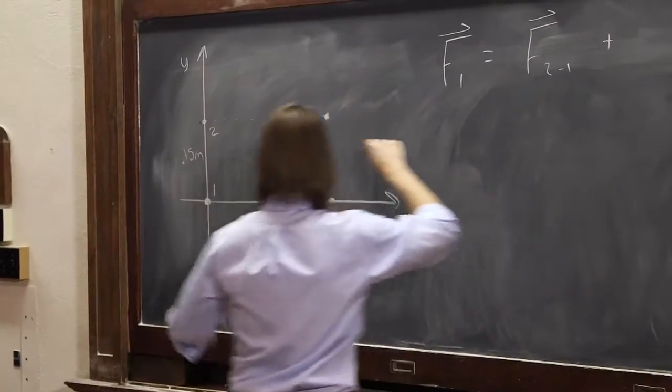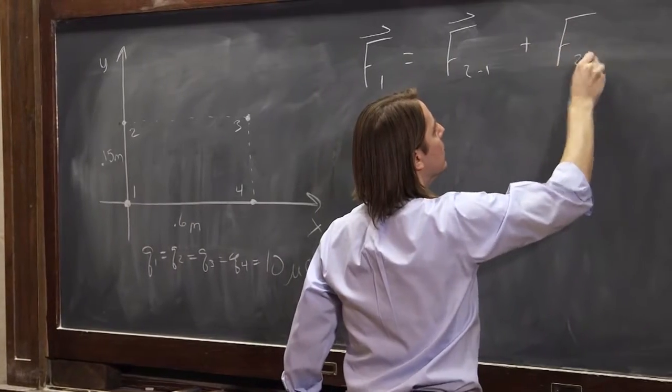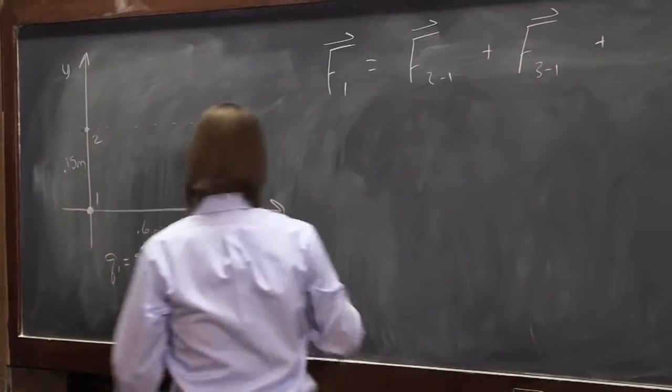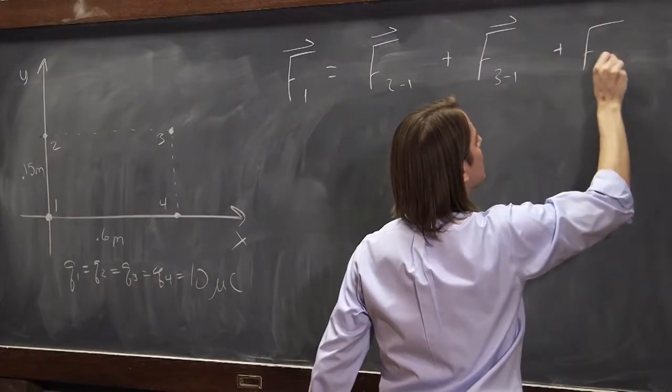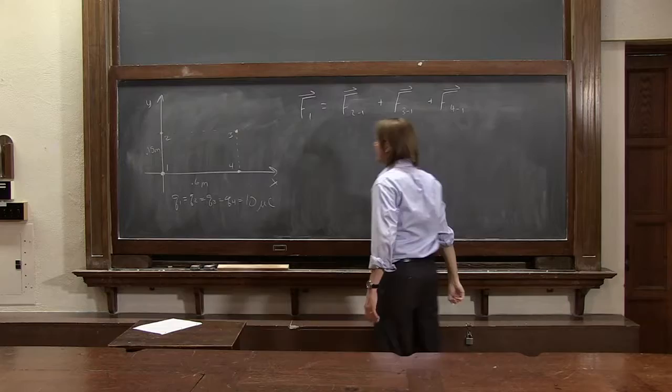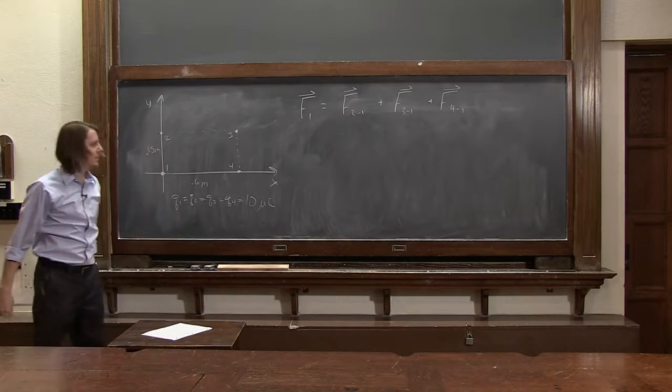So what we say then is the total force is the force that 2 applies to 1, F2,1 plus the force that 3 applies to 1 plus the force that 4 applies to 1. You just add them up.